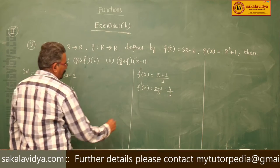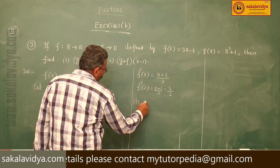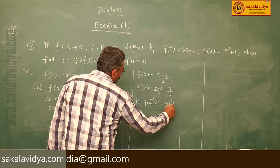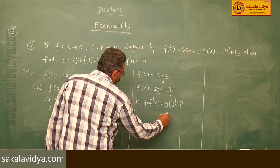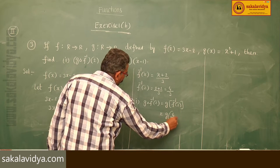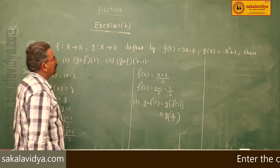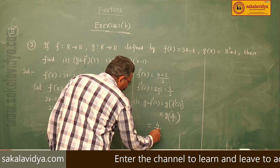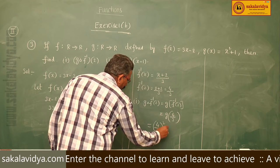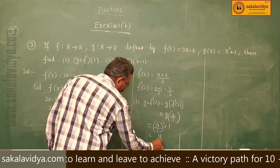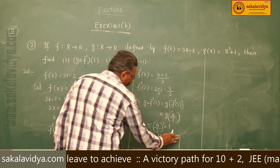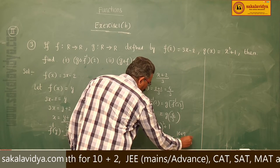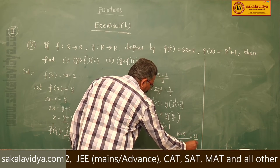Now, first problem: G∘F⁻¹(2) = G(F⁻¹(2)) = G(4/3). We know G(x) = x² + 1, so this is (4/3)² + 1 = 16/9 + 1. Taking LCM as 9, this gives (16 + 9)/9 = 25/9. This is the answer to the first problem.